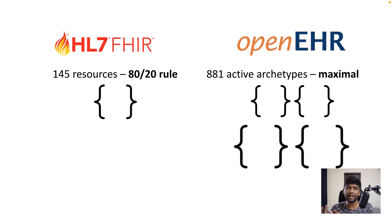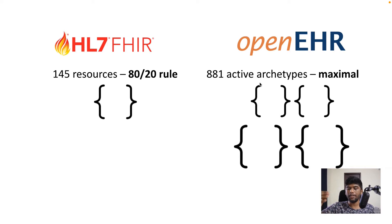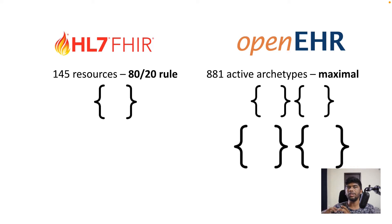OpenEHR has 881 active archetypes as of today — maximal datasets where people have gone through the effort of defining all possible data points. These are mostly clinically driven. In HL7 FHIR, changes are mostly driven by health IT people and only taken up if 80% agree, whereas in OpenEHR, even if one or two hospitals use a data point, if the governing body considers it valid, it gets added to the archetype. This allows downstream artifacts like templates where you can constrain things from the archetype for your system, while remaining 100% interoperable with anyone else using the same archetype — no need for profiles or extensions.